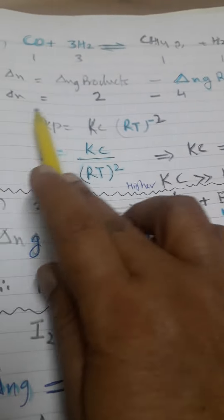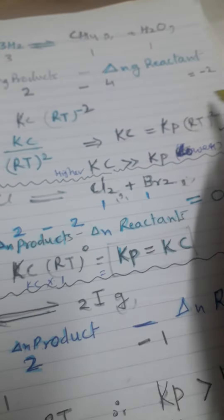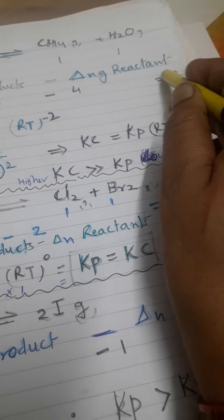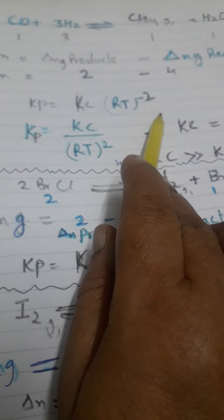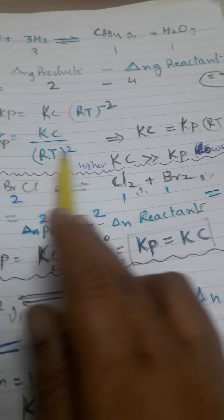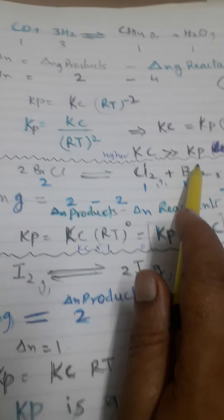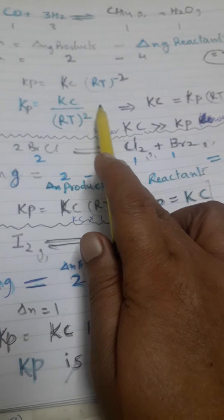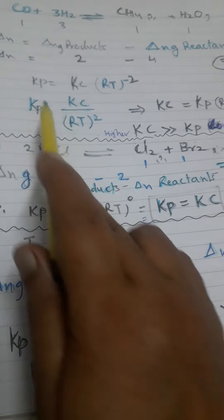In the second case with CO, there are 3 + 1 = 4 moles of reactant and 1 + 1 = 2 moles of product. So ΔN = 2 - 4 = -2. The formula gives Kp = Kc(RT)^(-2), or Kp = Kc / RT². This means Kp is much lower than Kc — Kc is much higher than Kp.